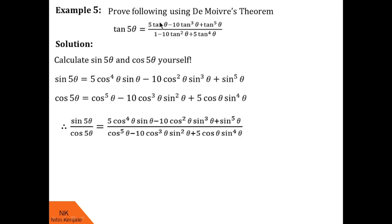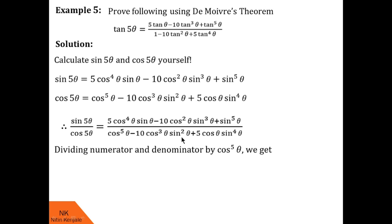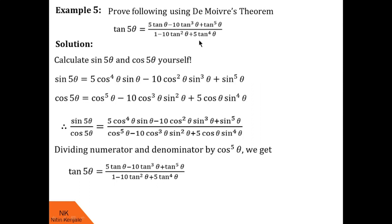The constants match — we have 5, −10, and 1 — but we need tan functions instead of sin and cos terms. Since we want tan⁵θ and we have sin⁵θ, we divide both numerator and denominator by cos⁵θ. Because sinθ/cosθ = tanθ, after dividing we get (5tanθ − 10tan³θ + tan⁵θ) / (1 − 10tan²θ + 5tan⁴θ) as required. Hence proved.